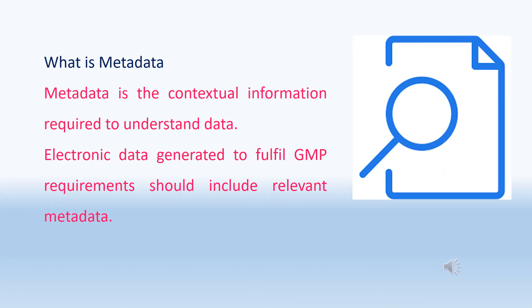What is metadata? Metadata is the contextual information required to understand data. For example, to understand an analytical report generated by a computerized system, you may need supporting reports like weighing slips, sample weights, or certificates of standards — these are the metadata. In a simple way, metadata is the background information required to understand raw data. Electronic data generated to fulfill GMP requirements should include relevant metadata.